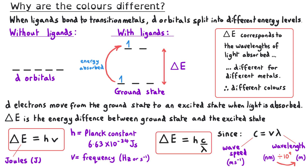We can substitute into the energy difference equation to get a substituted form: delta E equals Planck's constant multiplied by wave speed divided by wavelength. This tells us that a smaller energy difference will mean longer wavelengths of light are absorbed, so lower energy, while a larger energy difference will mean shorter wavelengths of light are absorbed, so higher energy.